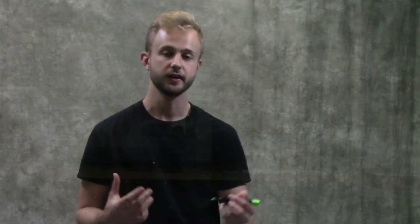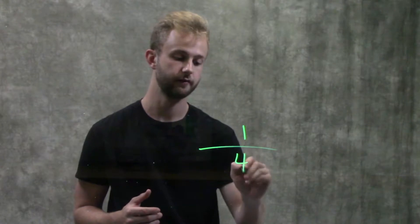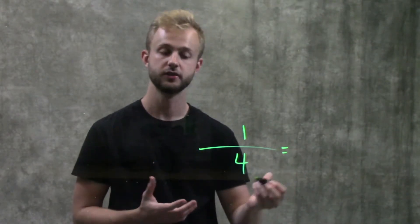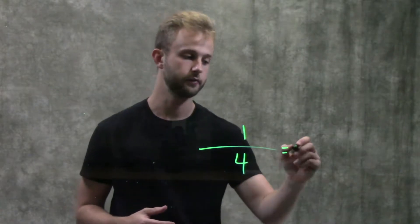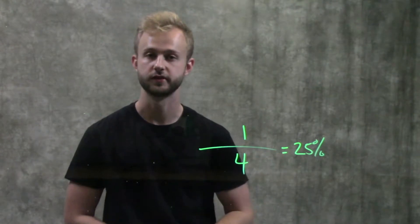How we calculate a recombination frequency is we take the number of recombinant offspring, so let's say we have one, and we divide it by the total number of offspring. So let's say we'll have four total. That will give us a percentage. For this, it would be 25%. So this is a 25% recombination frequency.